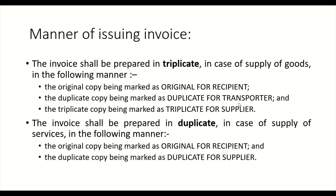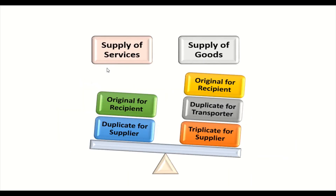The transporter must have the duplicate copy because of something called an e-way bill, which we will see later. For services, the invoice is prepared in duplicate only — original for the recipient and duplicate for the supplier — because services cannot be transported.